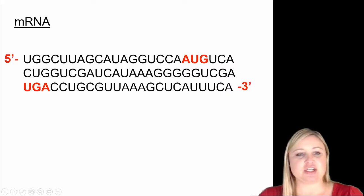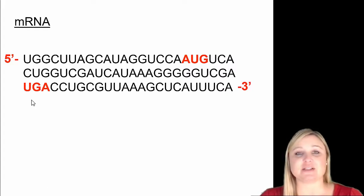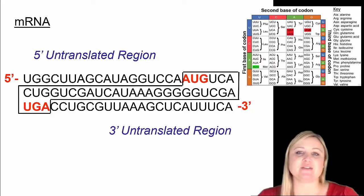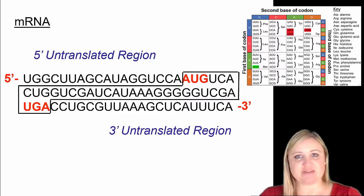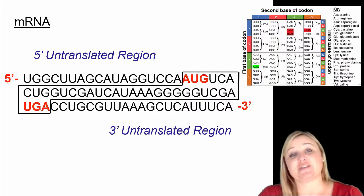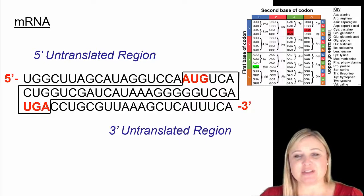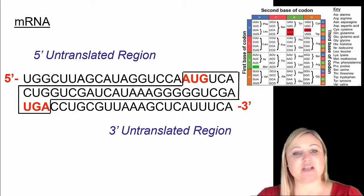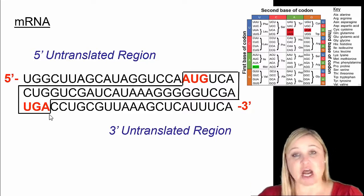So this whole piece from AUG to UGA is the part that's going to be translated — those are the instructions for what amino acids are going to be found in this protein. Pause the video, use your genetic code, and see if you can translate this and figure out which amino acids are in this protein. AUG encodes methionine, UCA encodes serine, CUG encodes leucine — then continue three by three until you get to UGA. Remember, UGA does not encode an amino acid; it encodes a stop signal so everything stops.